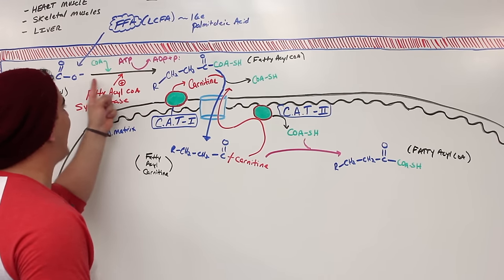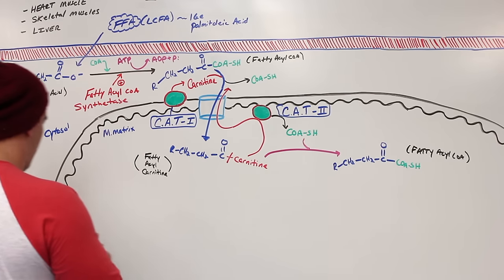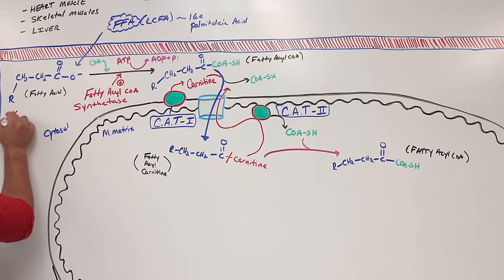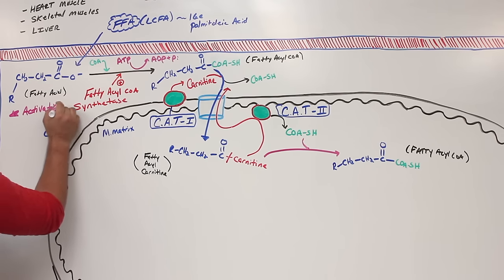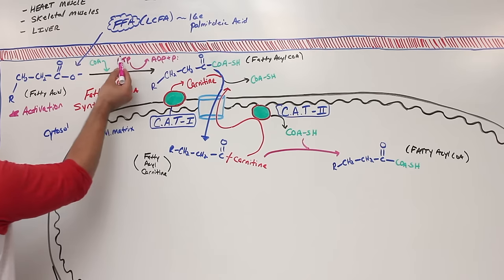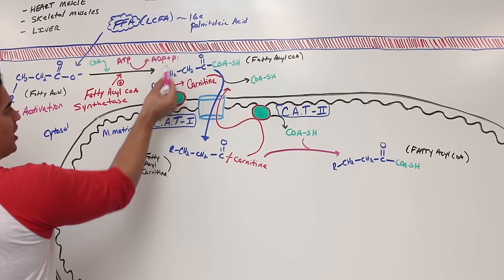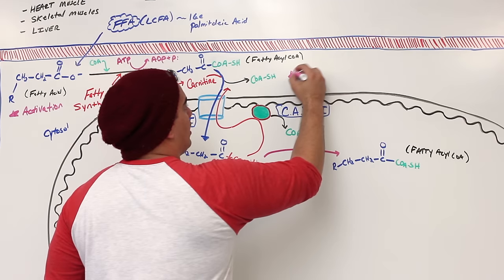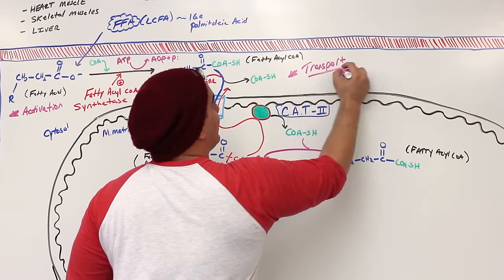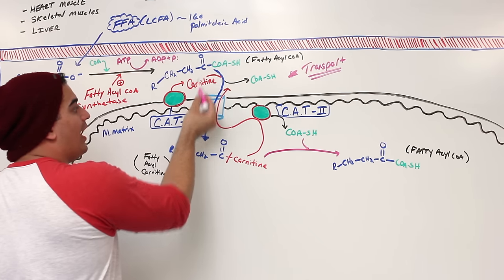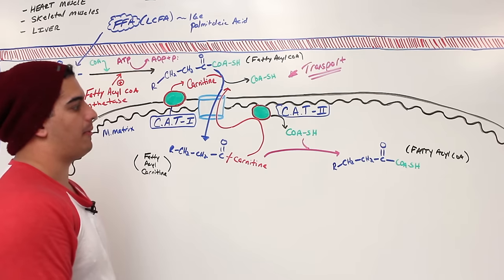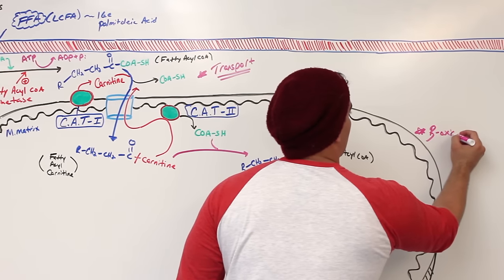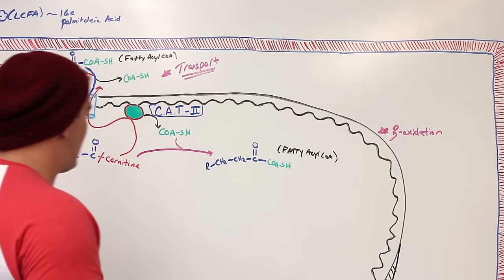To summarize the steps so far: the first step was getting the fatty acid into the cell and activating it — called activation — which adds a coenzyme A and converts ATP into ADP and inorganic phosphate, catalyzed by fatty acyl CoA synthetase. The second step is transport — getting the fatty acyl CoA into the mitochondria. Now we'll move on to beta oxidation.